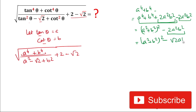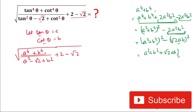Now this 2a²b² can be written as (√2·ab)², since squaring gives us that value. So we have (a² + b²)² − (√2·ab)². This is in the form of a² − b², so we apply the formula (a + b)(a − b), giving us: (a² + b² + √2·ab) times (a² + b² − √2·ab).